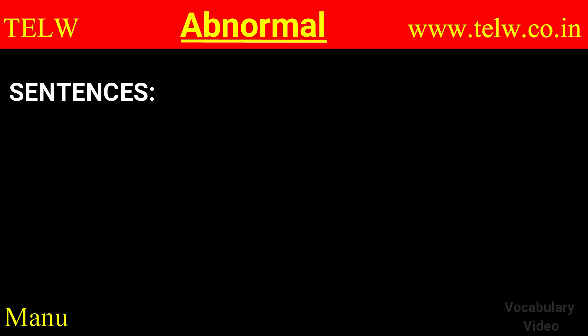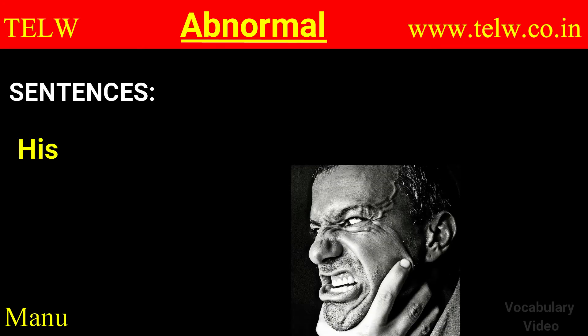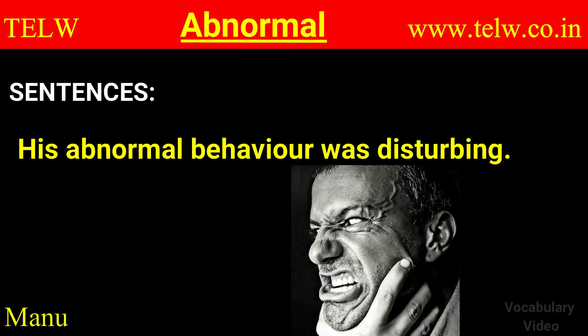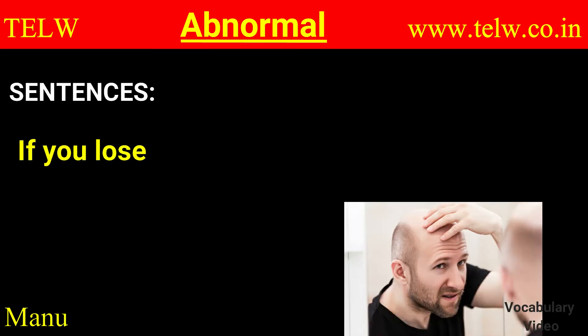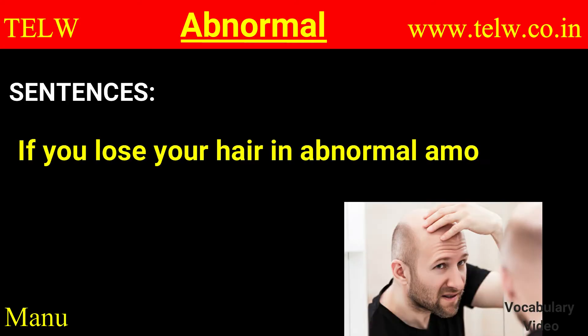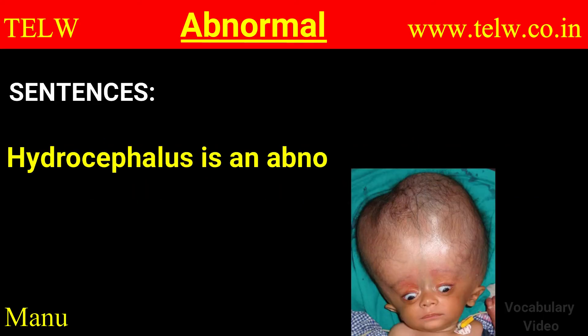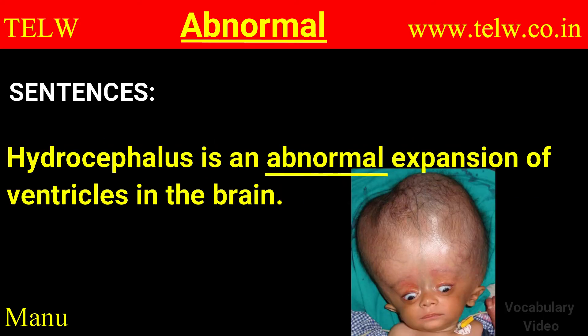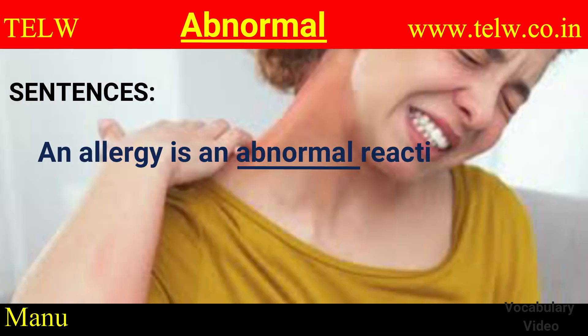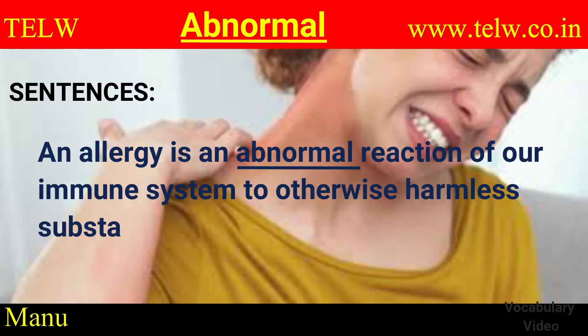Now let's see how this is used in sentences. His abnormal behavior was disturbing. If you lose your hair in abnormal amounts, you could take vitamin B12. Hydrocephalus is an abnormal expansion of ventricles in the brain. An allergy is an abnormal reaction of our immune system to otherwise harmless substances.